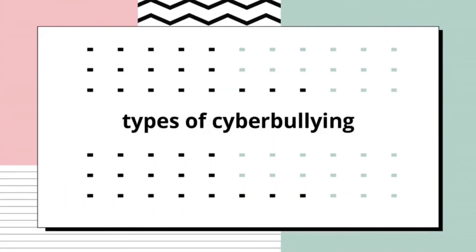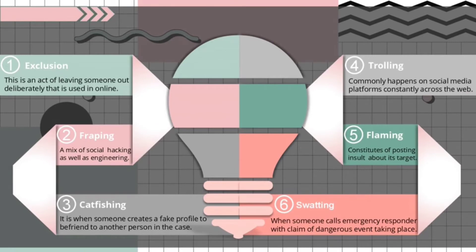Compared to traditional bullying, the effects of cyberbullying are often more significant — not only are hurtful messages sent, but words and images are often preserved online. Cyberbullying has different types. The first one is exclusion. Exclusion is the act of leaving someone out deliberately. It exists within in-person bullying situations but is also used online to target and bully a victim. For example, a child might be excluded or uninvited from groups or parties, or left out of message threads involving mutual friends.